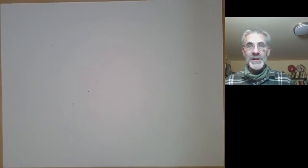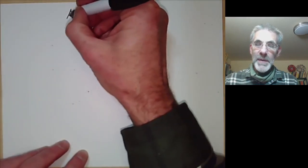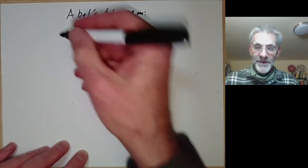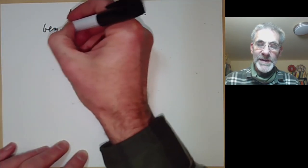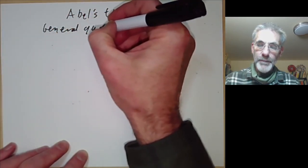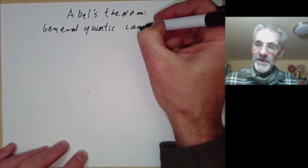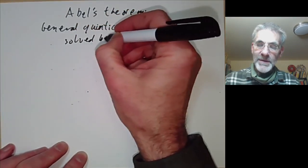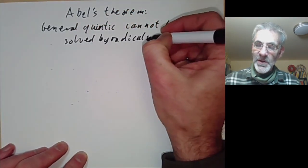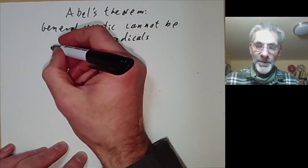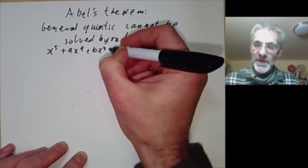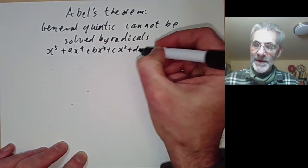This lecture is part of an online course on Galois theory and we will be talking about Abel's theorem. This is the very famous theorem that a general quintic cannot be solved by radicals. A quintic just means a polynomial of degree 5: x to the 5 plus ax to the 4 plus bx cubed plus cx squared plus dx plus e.